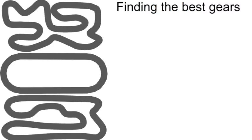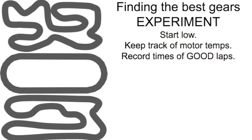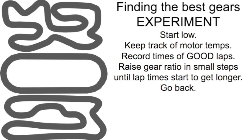To find the best gear ratio for any particular track, the best thing to do is simply experiment. Start with fairly low gears, and as you do this process always keep track of your motor temperatures. Make some laps and record the times of your good laps — use a timing system at a track or a friend with a stopwatch, something to record actual times rather than just whether or not you feel the car is going faster or slower. Then start raising the gear ratio in little steps, checking motor temperatures, until your lap times start to get slower. You'll speed up for a little bit and then start to fall off, so go back a gear or two to find the real sweet spot that gives you the best lap time.